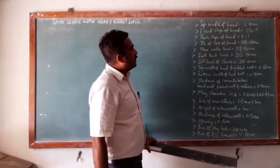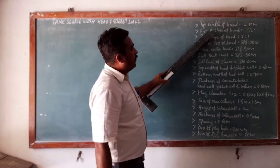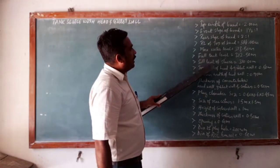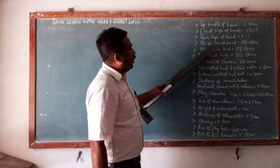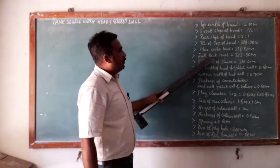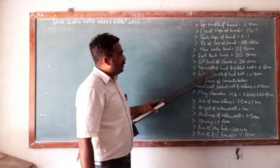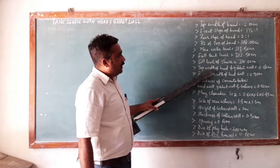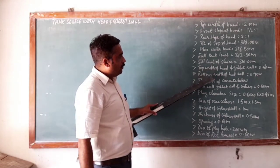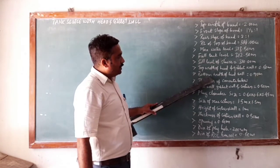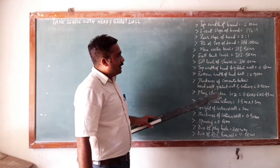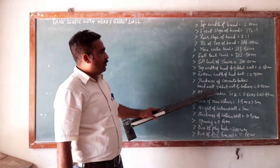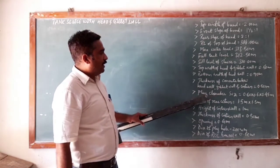The problem mentions the top width of the bund, the front slope of the bund, rear slope of the bund, and the different RLs — the RL of the top, the maximum water level, full tank level, and the sill level of the sluice. Then, the top width of the head wall as well as the gibbet wall, and the bottom width of the head wall have been given. The thickness of concrete below the head wall, gibbet wall, and cistern is uniform and is mentioned as 0.5 meter.